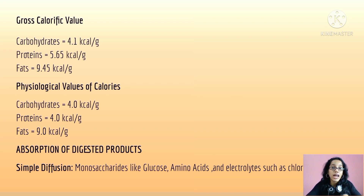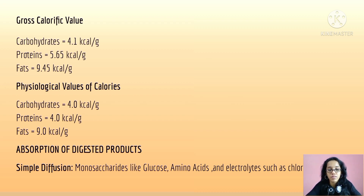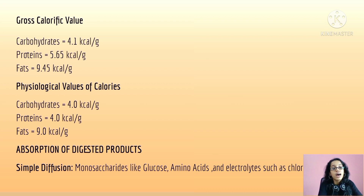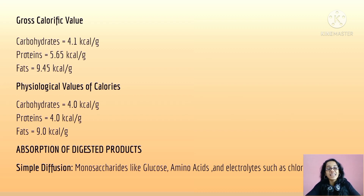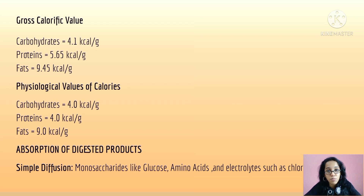The gross calorific value of carbohydrates is 4.1 kcal/g, for protein it is 5.65 kcal/g, and for fat it is 9.45 kcal/g. The physiological caloric values are: carbohydrates provide 4 kcal/g, proteins provide 4 kcal/g, and fats provide 9 kcal/g. Fats yield the most energy per gram, but fat digestion is more complicated than that of carbohydrates and proteins. During exercise, carbohydrates are used first, then proteins, then fats.